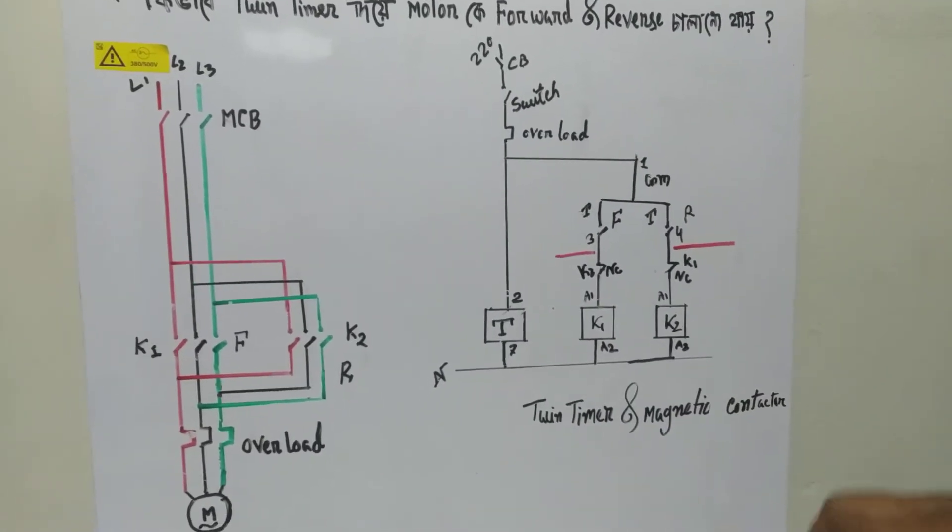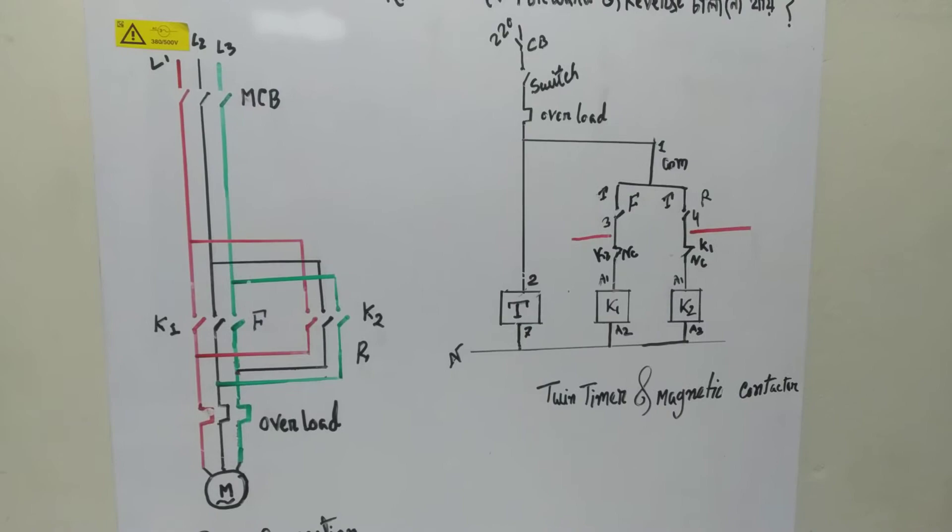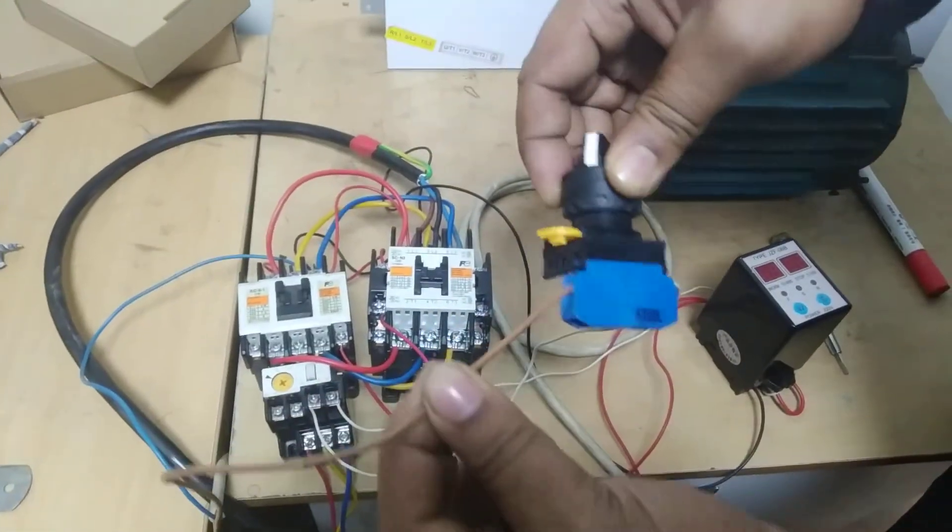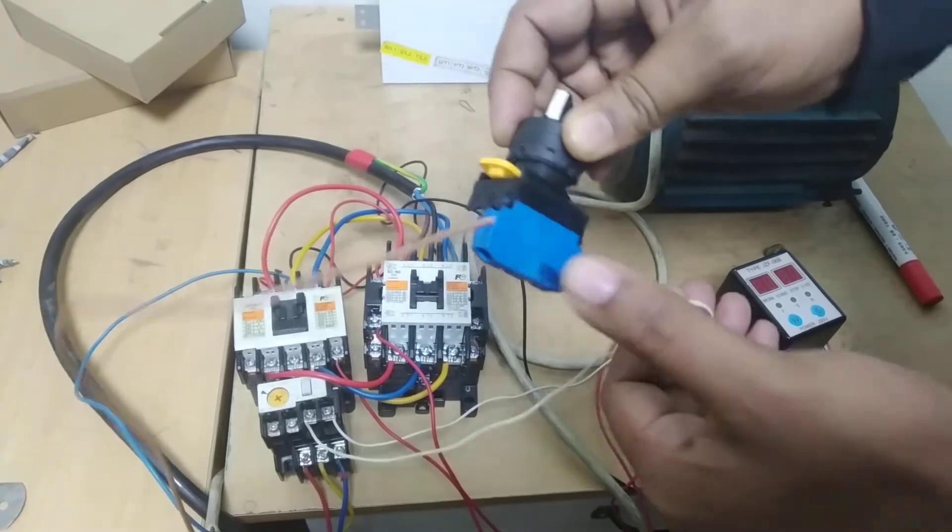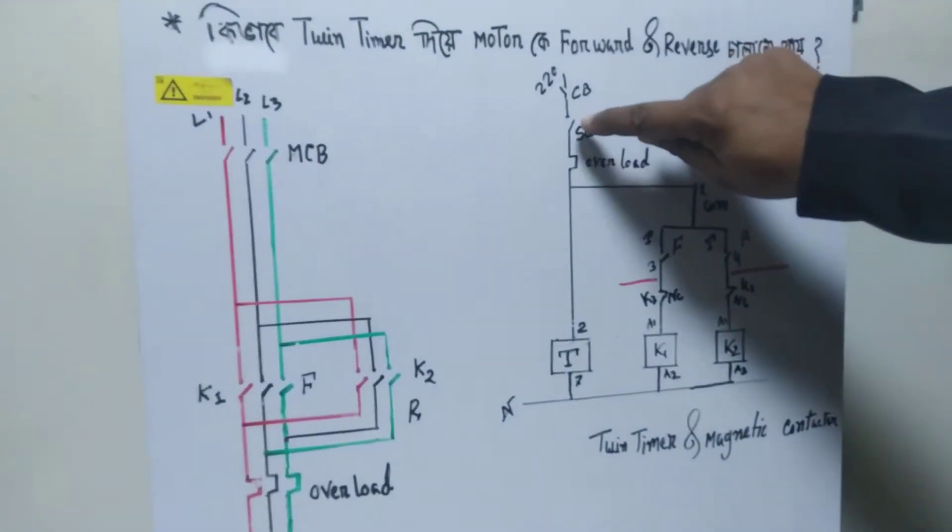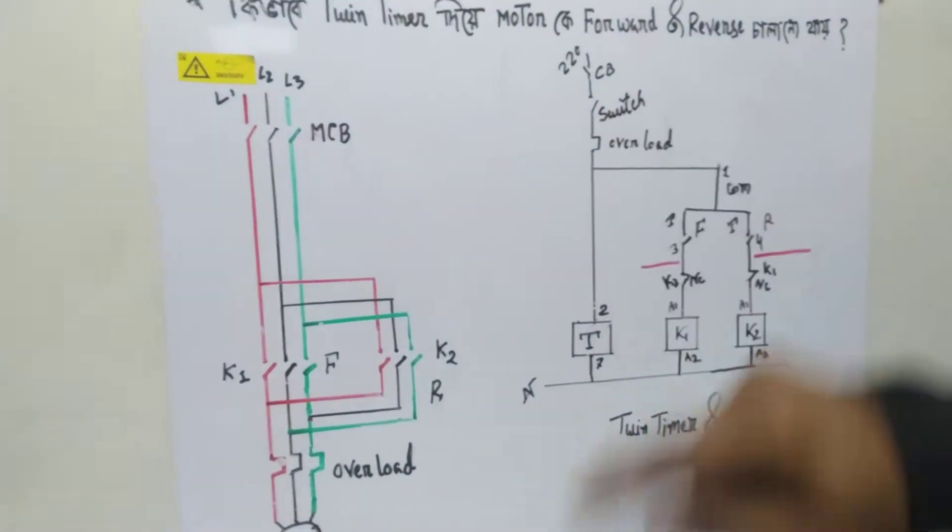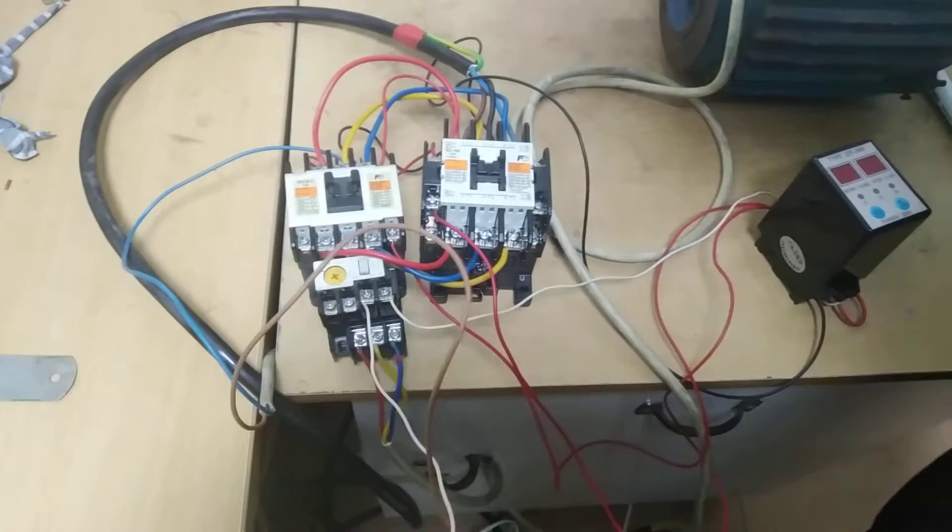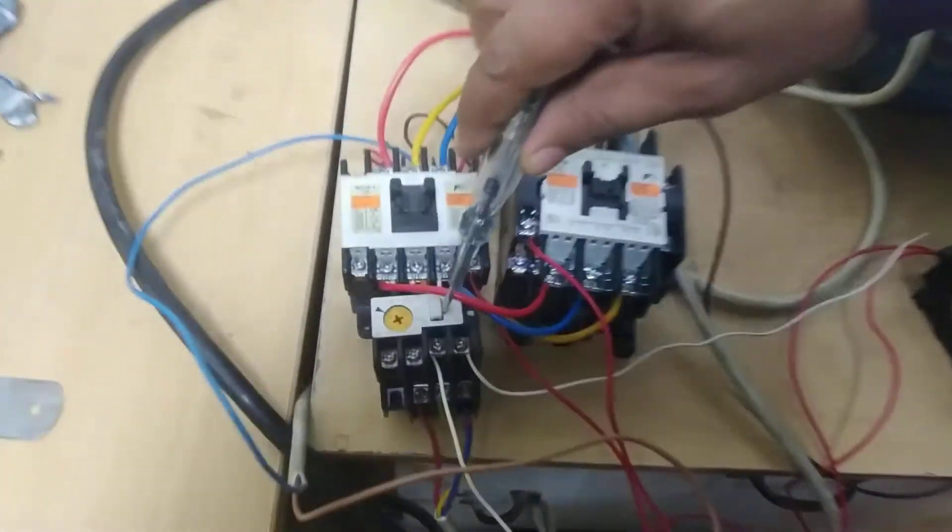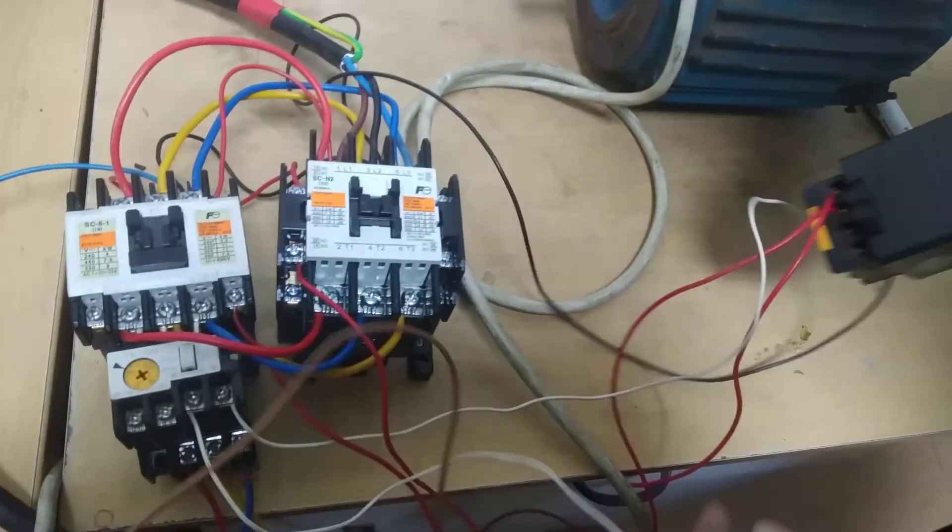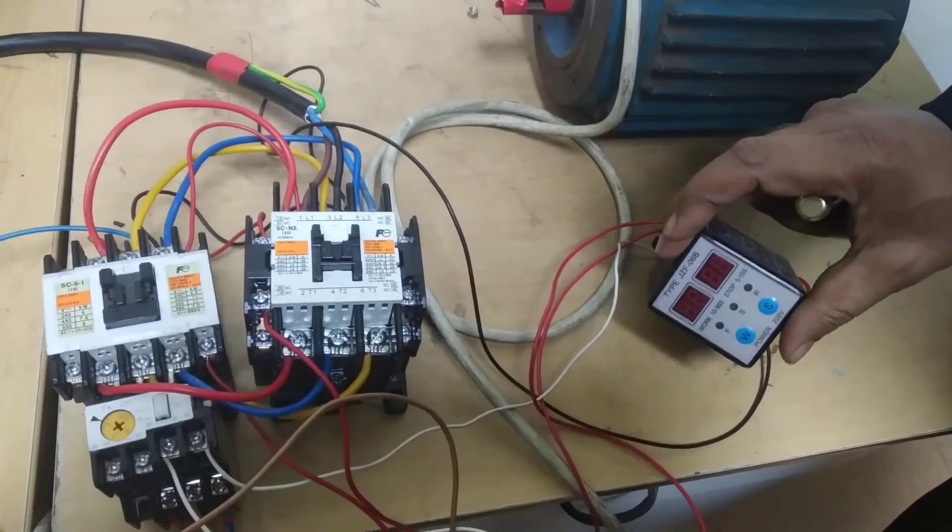Let's see the connection. We'll start with 220 power, then a switch, then the overload protection. The power feeds through the overload to the twin timer.